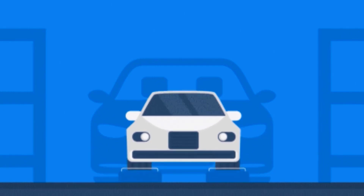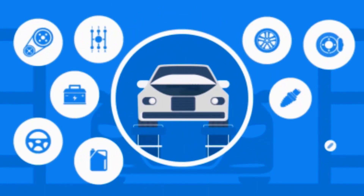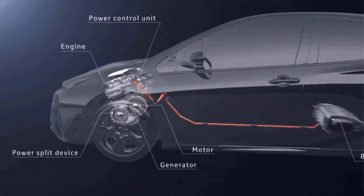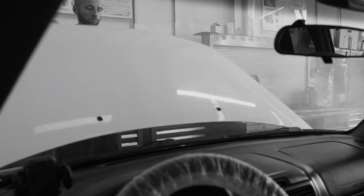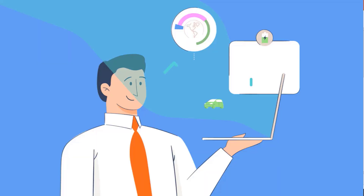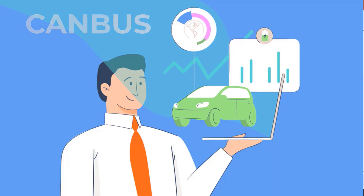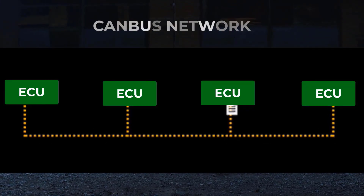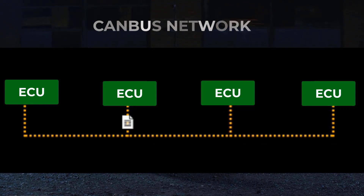Imagine your car as a system of interconnected components such as the engine control unit, transmission, ABS, airbags, and more. In the past, these components relied on separate wiring, resulting in a wiring nightmare. But with the CAN bus, all these components communicate effectively over a single network.